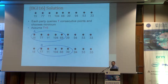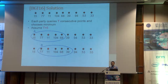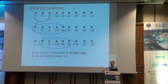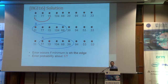Here is a simple solution suggested by the authors. We have a sequence of numbers on the line. Each party queries T consecutive points starting from their position going forward, and chooses their minimum. For example, with T equal to 5, both players do this and the minimum value 11 is the common minimum for both, so they can synchronize. But if we swap the first two numbers, they do not synchronize because one chooses the first number and the other chooses a different number. Error occurs only when the minimum is at the endpoint, so the error probability is about 1/T.